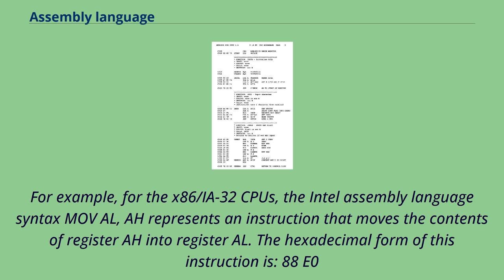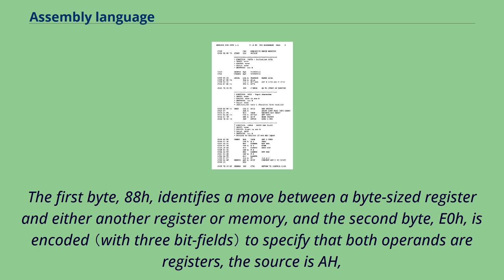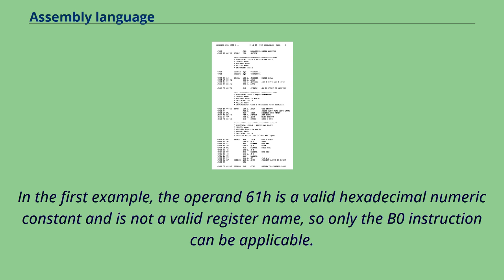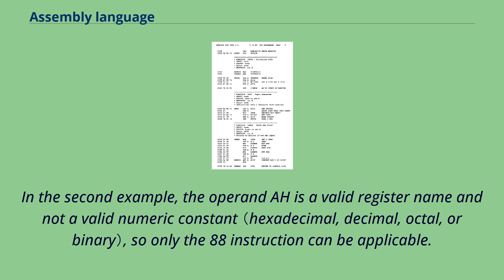For example, for the x86/IA-32 CPUs, the Intel assembly language syntax MOV AL, AH represents an instruction that moves the contents of register AH into register AL. The hexadecimal form of this instruction is 88E0. The first byte, 88h, identifies a move between a byte-sized register and either another register or memory, and the second byte, E0H, is encoded to specify that both operands are registers, the source is AH, and the destination is AL. In a case like this where the same mnemonic can represent more than one binary instruction, the assembler determines which instruction to generate by examining the operands.